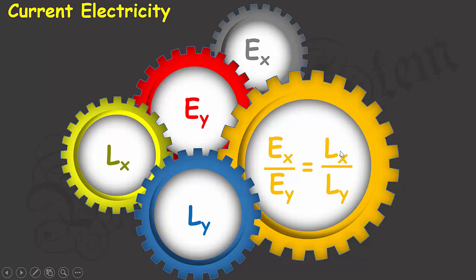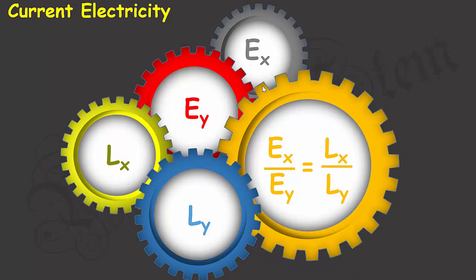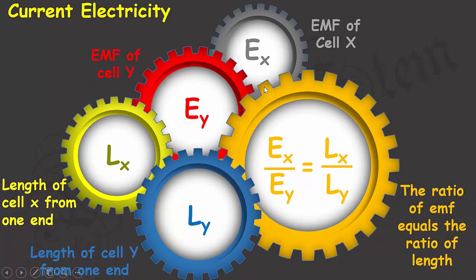E subscript X stands for the electromotive force of cell X, E subscript Y stands for the electromotive force of cell Y, L_x stands for the length of cell X from one end, and L_y is the length of cell Y from one end. Now using this formula, we'll figure out the problem.